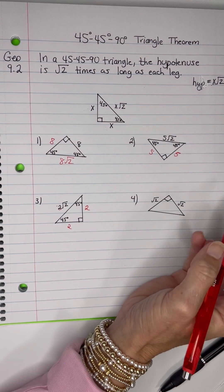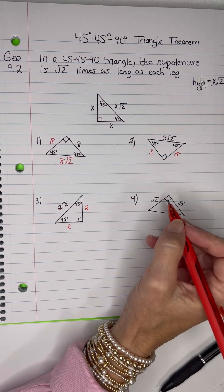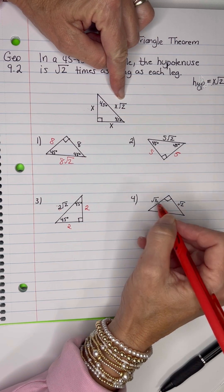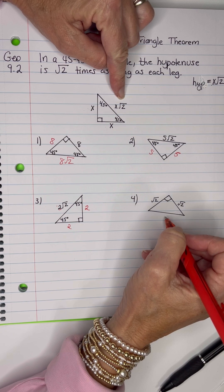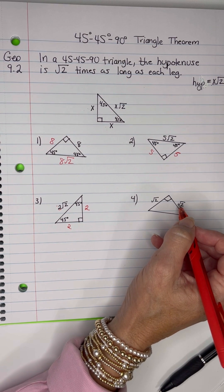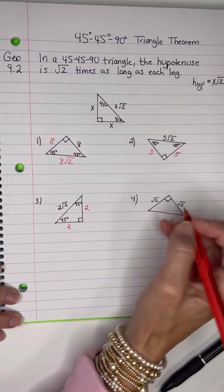Okay. On this one right here, we have two legs that are root 2, which is not the hypotenuse. So the root 2 doesn't always have to be in the hypotenuse. Sometimes they put it in a different place. So in a problem like this, I like to write my little sentence down.